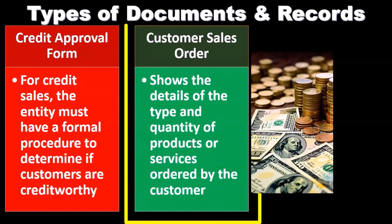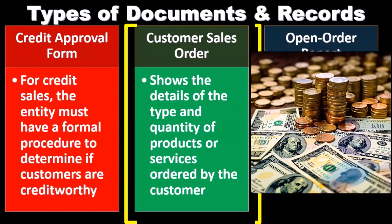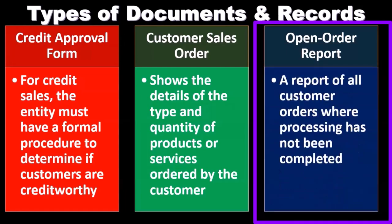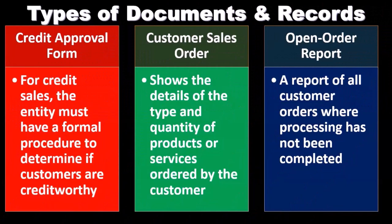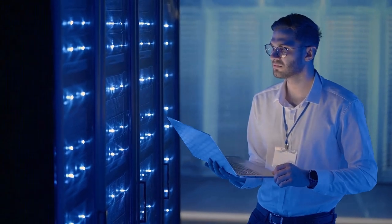The customer sales order shows the details of the type and quantity of products or services ordered by the customer. Then we have the open order report — a report for all customer orders where processing has not been completed. We need to know what the open order report is because if the work has not yet been done, we typically shouldn't be recording revenue until the work has been completed. We need to understand when revenue will be recognized so that we can test that system.